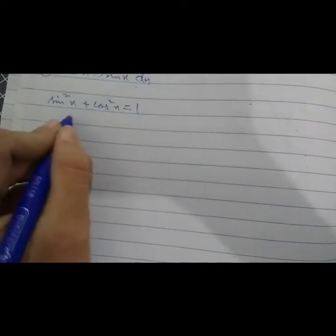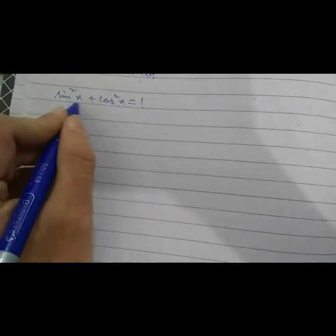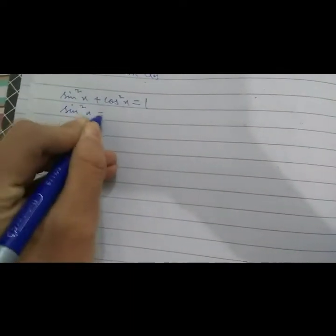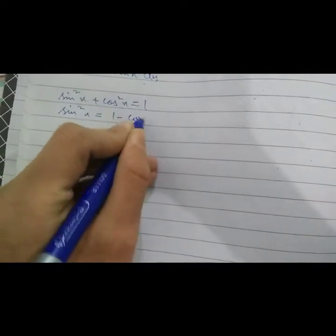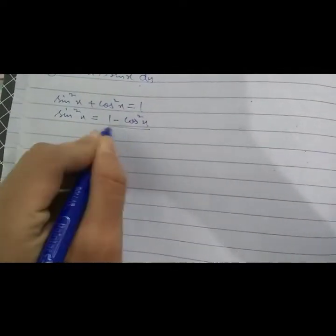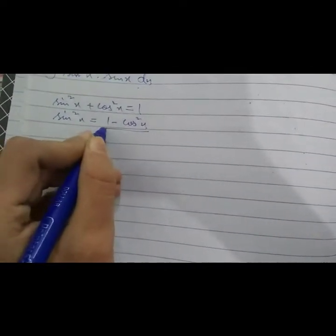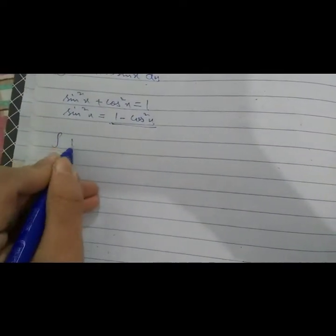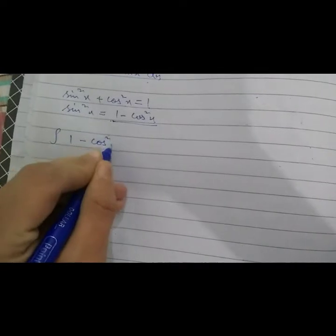You don't have to worry, it is an easy method. So we have to take the value of sine square x from here. Sine square x is equal to 1 minus cosine square x. We got the value, so we have to substitute this value: 1 minus cosine square x.